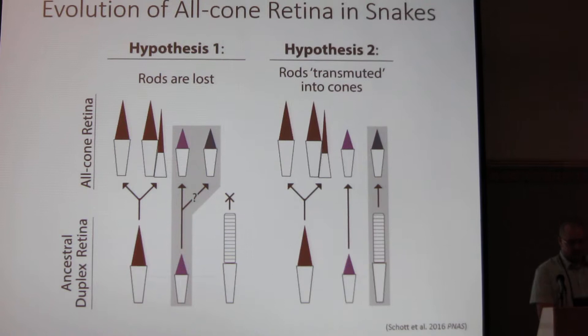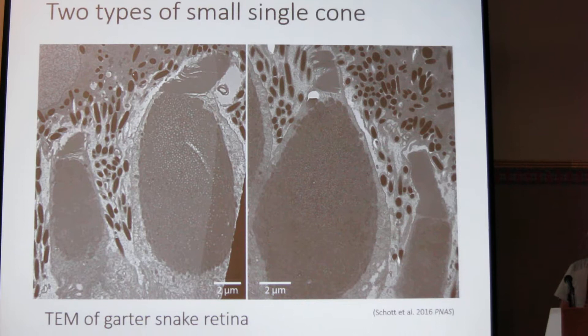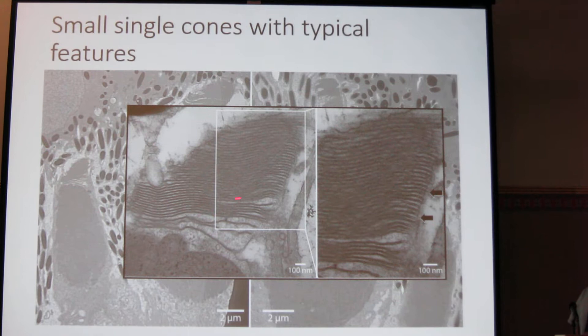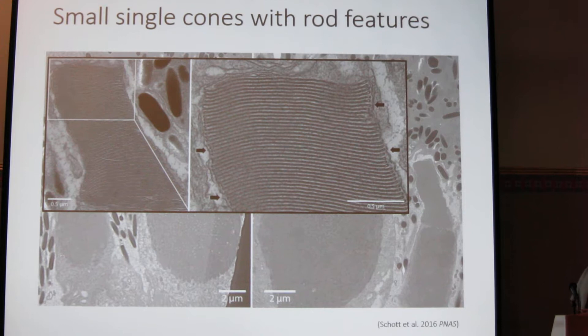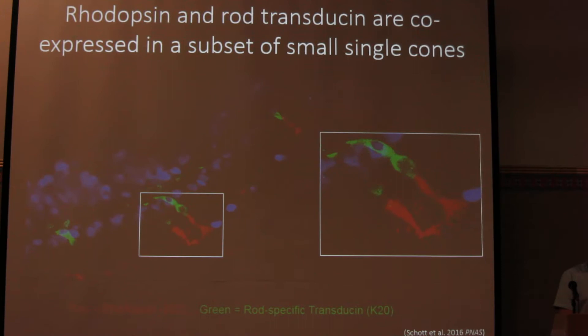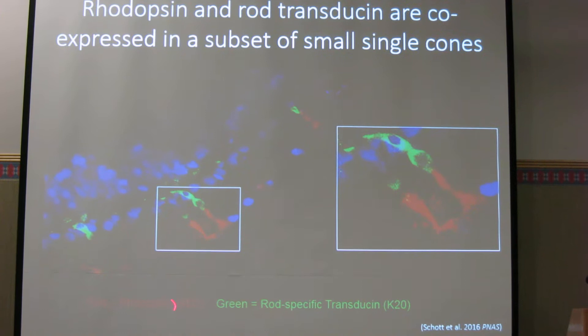We're going to test this first by looking at the garter snake using transmission electron microscopy. We've identified two different types of small single cones and these are the large single cones. The first type has the expected morphology: a short tapered outer segment with open discs. However, the other type actually looks more rod-like, with a narrower inner segment and most importantly has the closed discs that we'd expect in a rod. We next wanted to look at the proteins in these cells, and using immunochemistry we were able to detect both rhodopsin and rod-specific transducin within the same subset of small single cones.